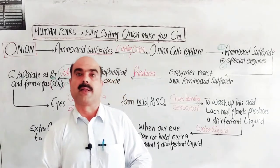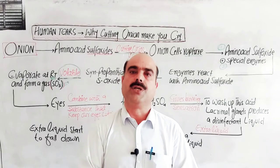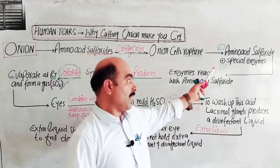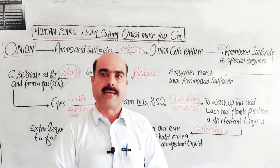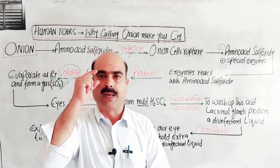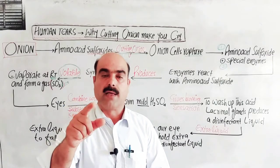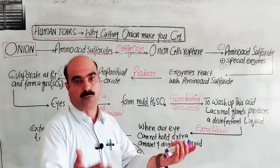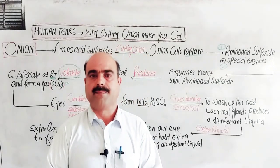When we cut onion, the amino acid converts with enzymes to a special compound. These enzymes react and sulfur trioxide gas is formed. The sulfur trioxide gas reaches the human eye and reacts with the liquid and water present there to form H2SO4. This causes burning sensation in our eyes.